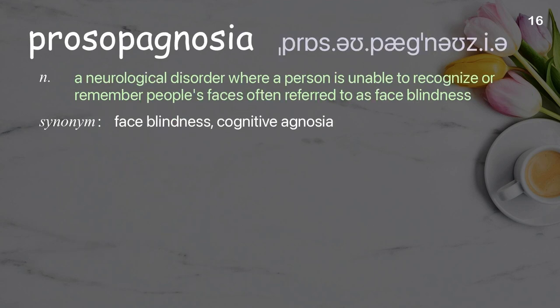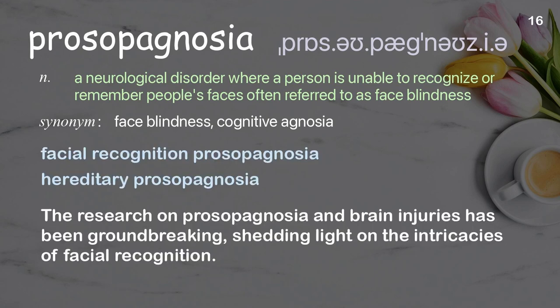Prosopagnosia. A neurological disorder where a person is unable to recognize or remember people's faces, often referred to as face blindness. Examples: facial recognition prosopagnosia, hereditary prosopagnosia. The research on prosopagnosia and brain injuries has been groundbreaking, shedding light on the intricacies of facial recognition.